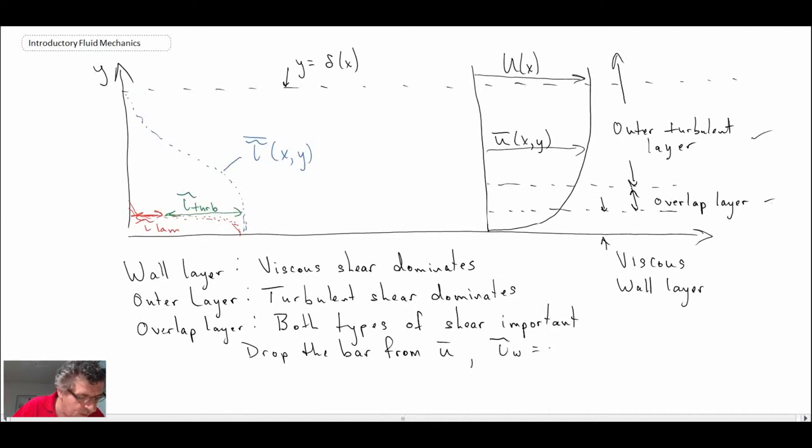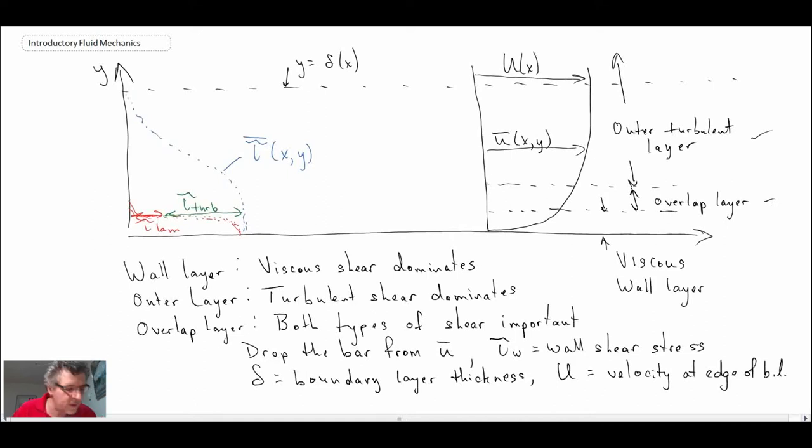Tau wall equals wall shear stress. Delta, which I've shown in this picture here, is the boundary layer thickness. And capital U is velocity at edge of the boundary layer. Okay, so we're going to use those things.